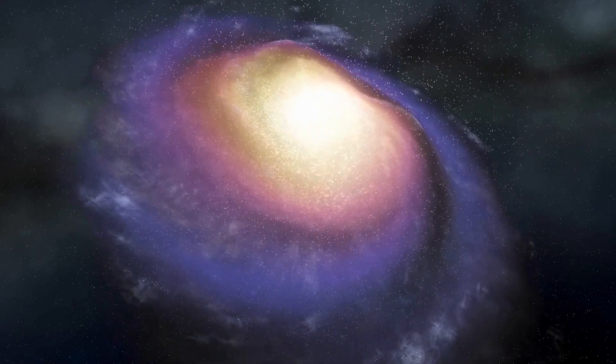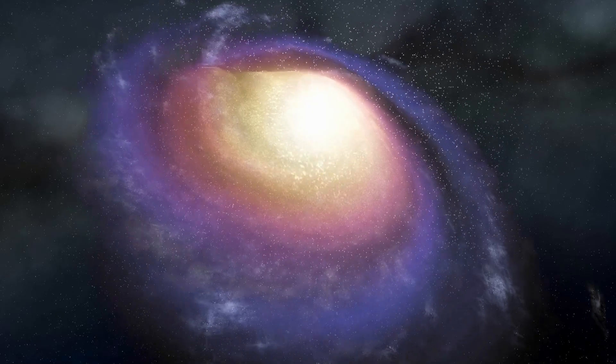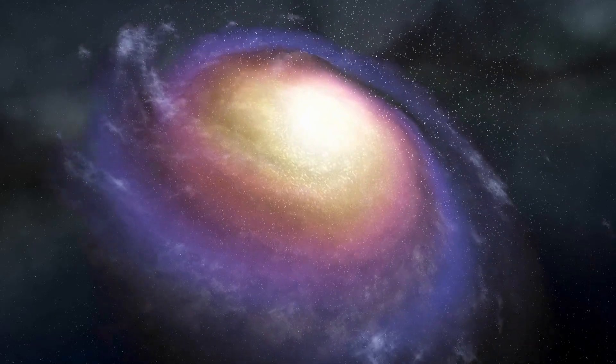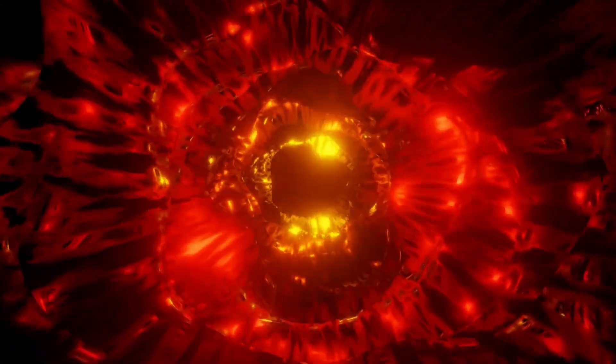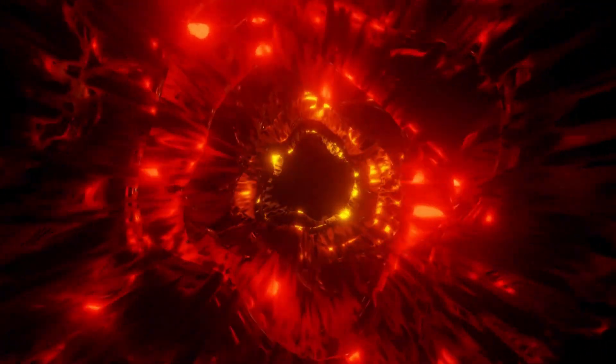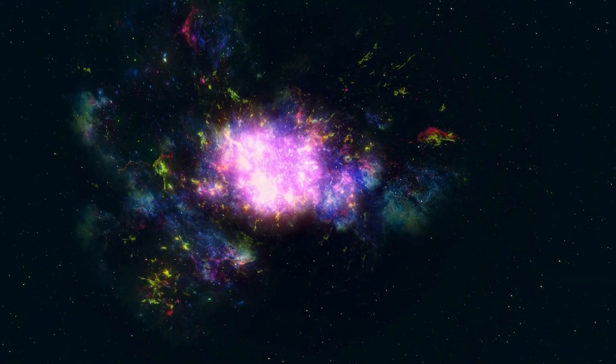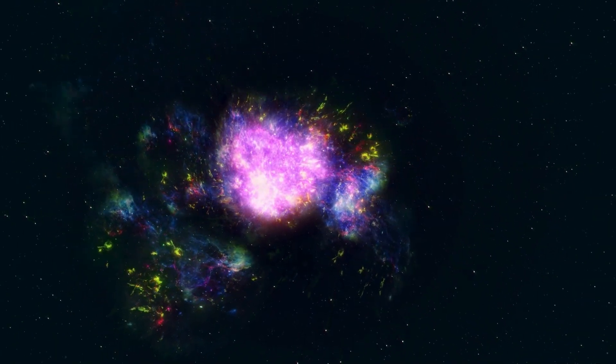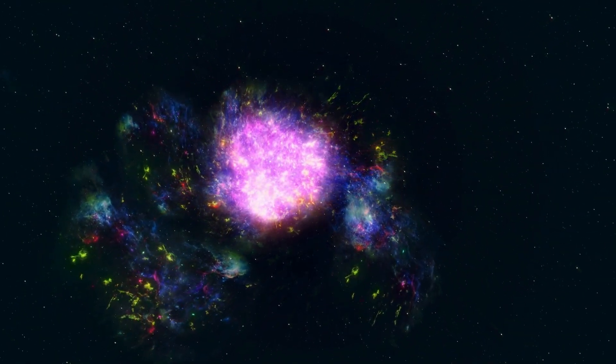Then comes the climax when iron starts forming at the core. Unlike lighter elements, iron doesn't release energy when fused, so the energy produced isn't enough to resist the star's own crushing gravity. The star balloons in size and creates an implosion, followed by a massive rebound effect, resulting in the explosive force of a supernova.